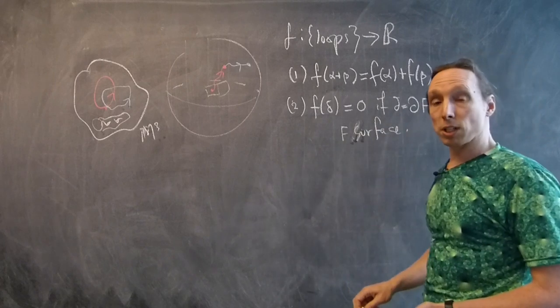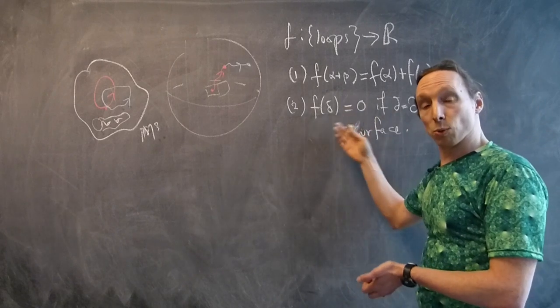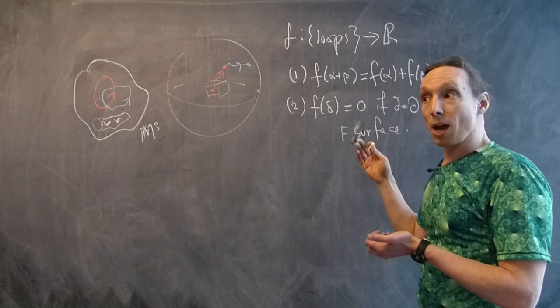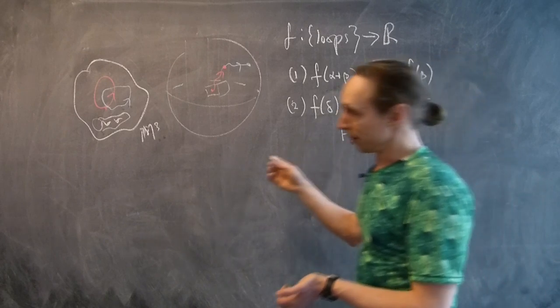Okay. So that's what cohomology classes are. They're functions on loops which spit out numbers. How do we get a cohomology class? Well, that's not so bad.